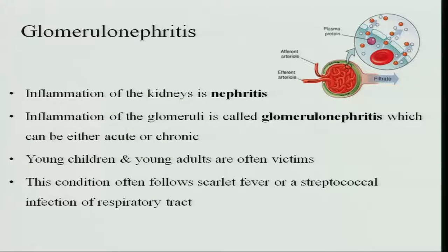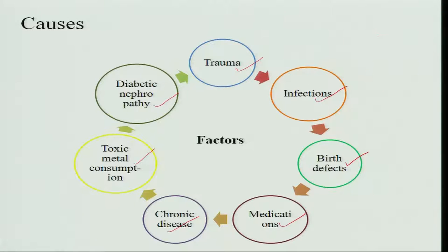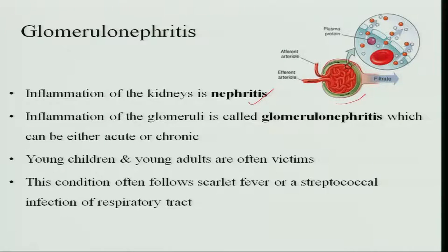Glomerulonephritis is the inflammation of the nephrons. The nephrons contain a filter called the glomerulus, and this part of the kidney gets inflamed and the wall of the glomeruli is damaged. Normally, the glomeruli do not allow proteins to leave the kidneys — they filter and send proteins back into the blood. But when the glomeruli are damaged, protein particles and red blood cells escape and get excreted in the urine. Inflammation of the glomeruli is called glomerulonephritis and can be acute or chronic.